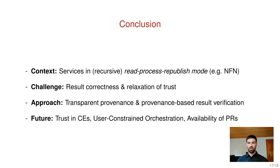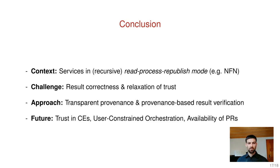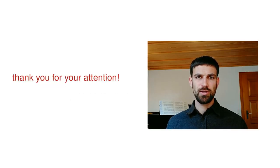With that I come to the conclusion of this work. We presented a solution in the context of in-network services which act in a recursive read-process-republish mode — we are thinking of NFN but other systems could also benefit. We identified a challenge around result correctness and trust in NFN. Our approach was to relax the trust assumptions by introducing transparency and provenance, and a procedure to verify results based on provenance. We mentioned several open topics for future work, meaning our solution still needs more elements to become a deployable solution. Thank you for your attention.